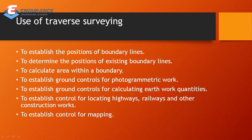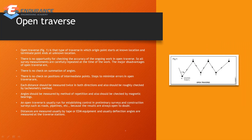If you have a highway, railway, or other construction works, you can check the alignment and locate it using Traverse Surveying. You can also map the area. There are two types of Traverse: one is open Traverse and the other is closed Traverse.